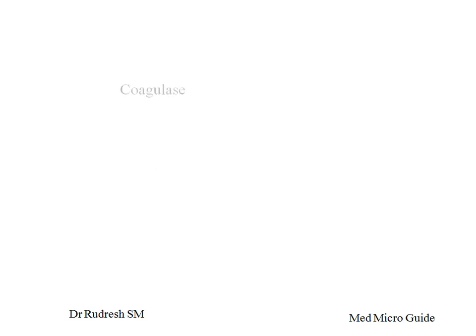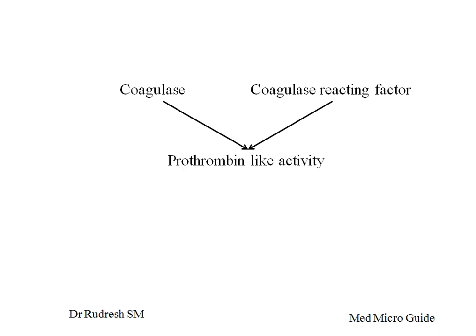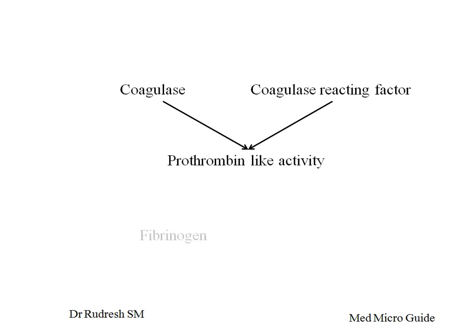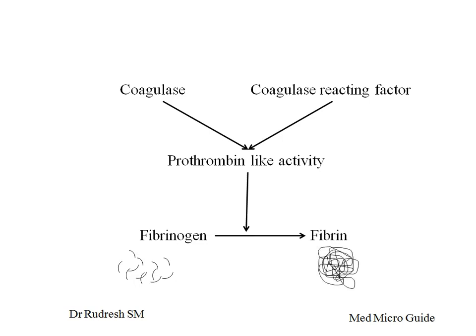Let us see how the coagulase will act. Coagulase, along with the coagulase reacting factor, will act like a prothrombin. This complex will convert the fibrinogen into fibrin, and this fibrin will be seen as a clot.